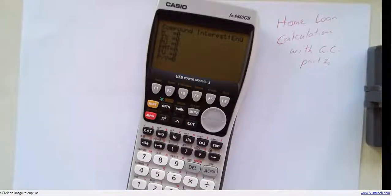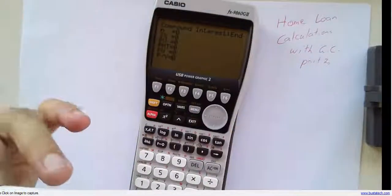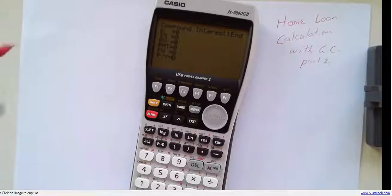The big takeaway from this video is if you know everything except for one, you can find the missing one. So if you know everything except for the number of periods, you can find the number of periods.